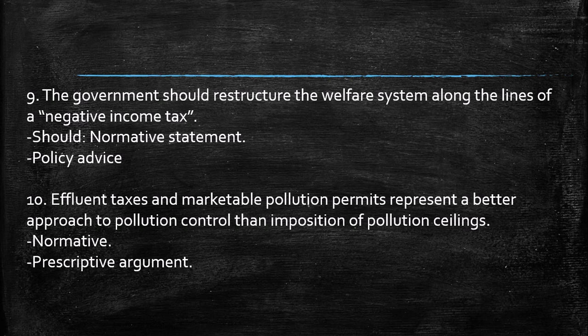The ninth statement is: the government should restructure the welfare system along the lines of a negative income tax. Once again, we are talking about 'should,' so it's a normative statement — more about policy advice. The last one is: effluent taxes and marketable pollution permits present a better approach to pollution control than the imposition of pollution ceilings. We are talking about a more subjective position, so this is normative.